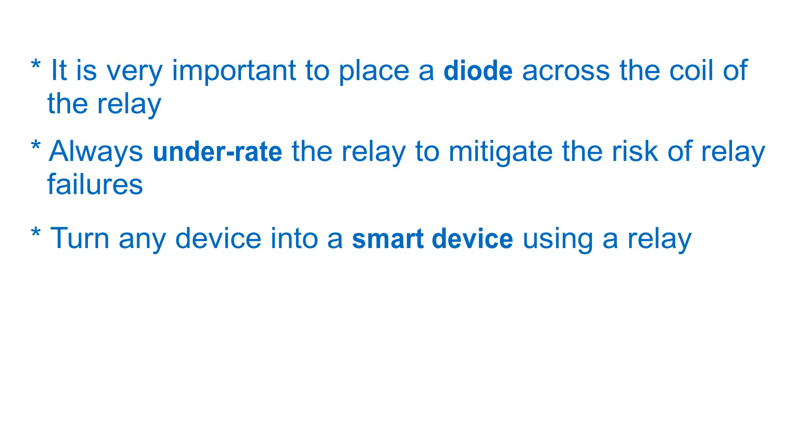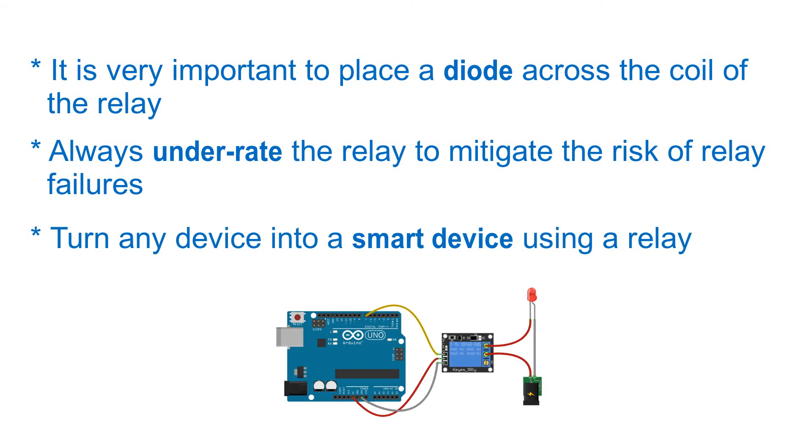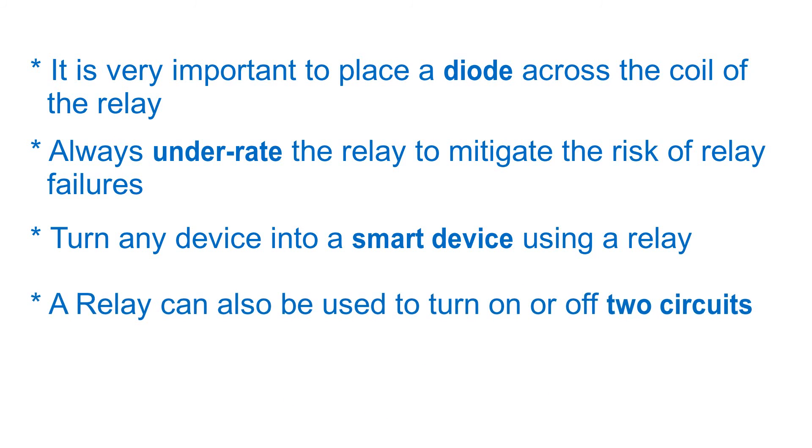If you just replace the LED with any other electrical device like a fan, bulb, fridge, etc., you should be able to turn that appliance into a smart device. A relay can also be used to turn on or off two circuits: one when the electromagnet is on and the second one when the electromagnet is off.